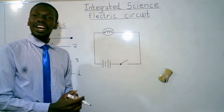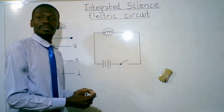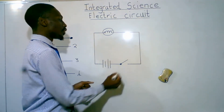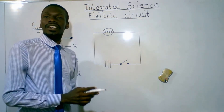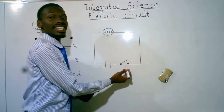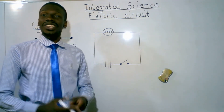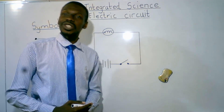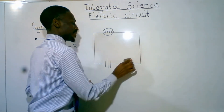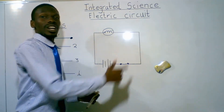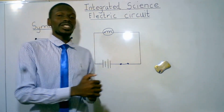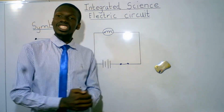Apart from a connecting wire, we've got a battery — a battery is the source of energy. Apart from a battery, we've got a switch. The function of a switch is to open and close. When the switch is open, current is not flowing. But when the switch is closed, current is moving and this bulb is going to turn on because the switch is closed.